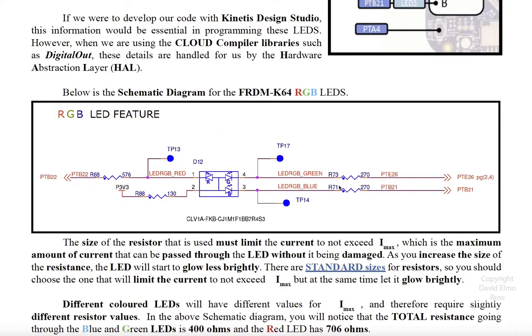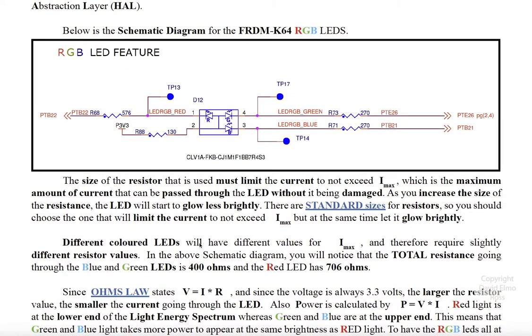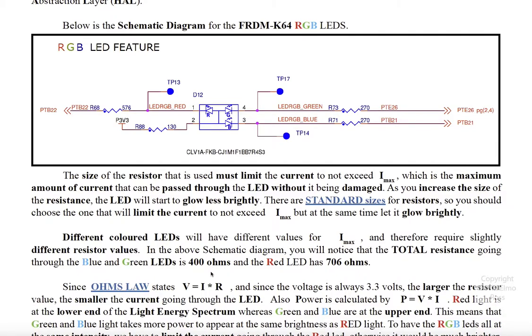Now, you'll also notice that we have different types of resistors here. We have 270 here and here on our blue and our green LEDs, but we have 576 ohms here on our red LED. And we also have a resistance going in to begin with before we start here, so the total resistance that we have here is different. If we look down here, it says different colored LEDs will have different values for I-max.